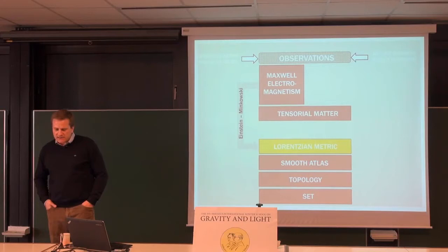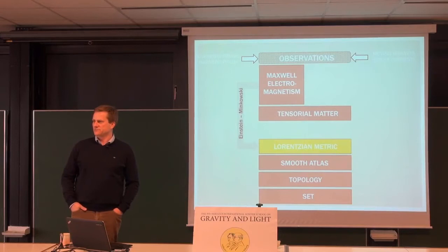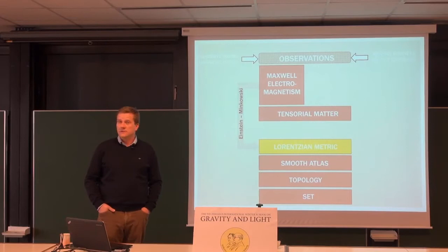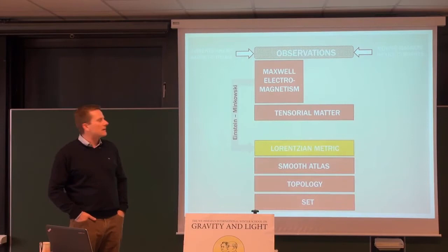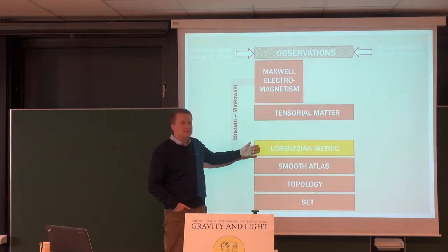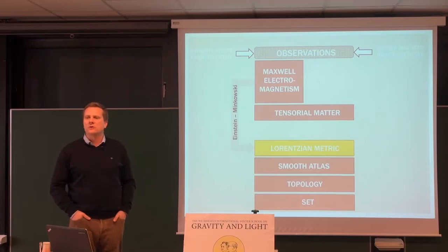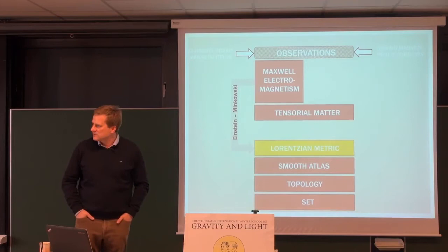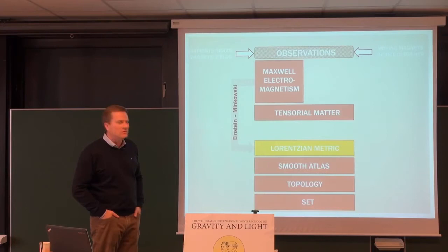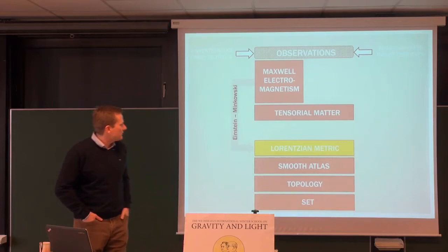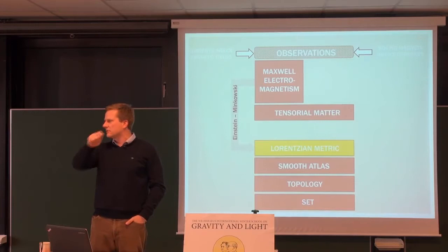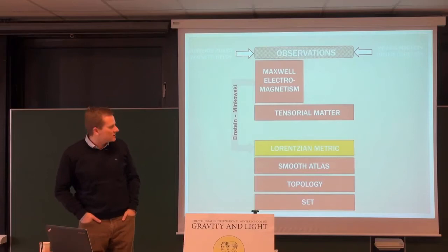Then, in 1905, Einstein stared at the Maxwell equations. He realized that if these equations are true — and they ought to be true because they describe all kinds of phenomena known at the time — he saw, after all, with the help of Minkowski and others, that the space has a structure all by itself. It carries a geometric structure, which today we call a Lorentzian metric. The decisive observation was that some theory that came from observations dictated that you think of space-time this way.